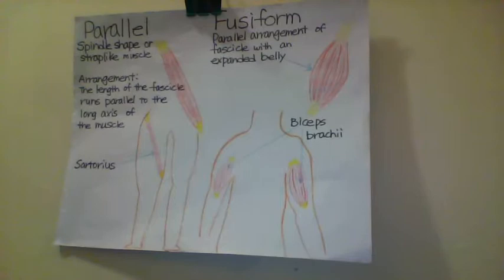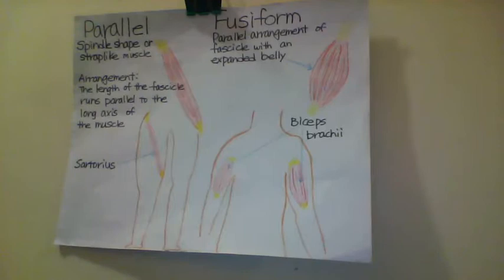Fusiform muscle is a type of parallel muscle. But the muscles have a large mass of tissue located in the middle of the muscle, between the insertion and the origin. An example of this fusiform muscle is the biceps brachii.